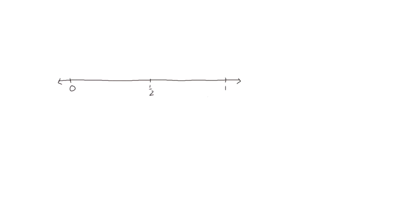Now let's, without measuring exactly, plot some fractions on the number line compared to these benchmark numbers that we're pretty familiar with. So we have zero, one half, and one. Let's say we want to plot five twelfths. Well, we know it's greater than zero and less than one, so it's somewhere in between. And if I think about twelfths, I know that one half is equal to six twelfths. So five twelfths would be somewhere a little bit less than half. So this would be a good estimate of where five twelfths would go.